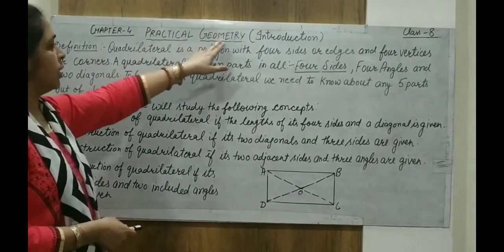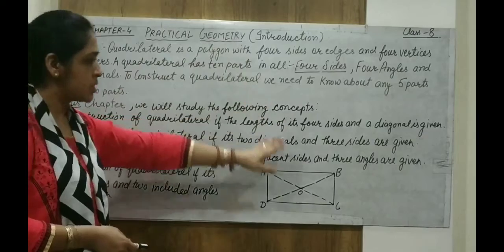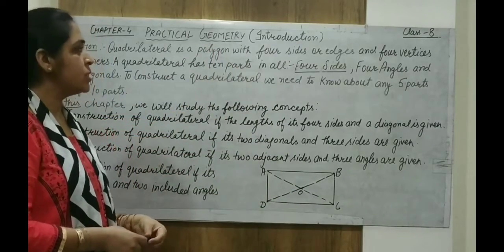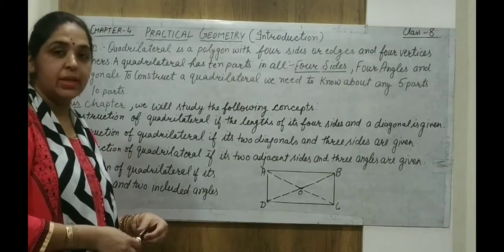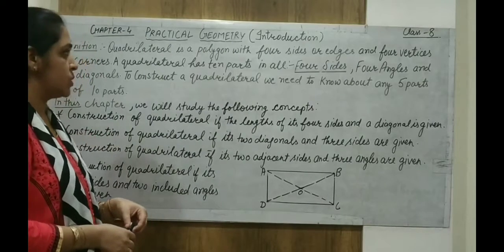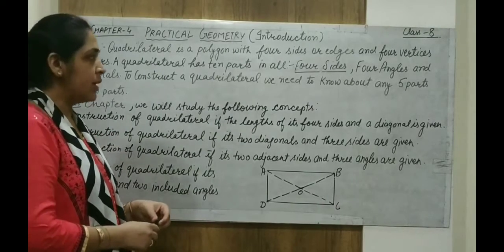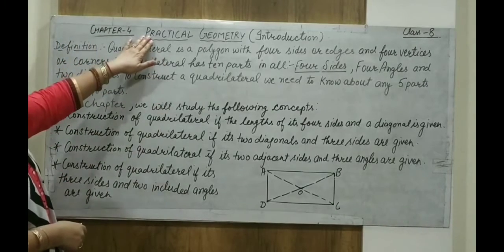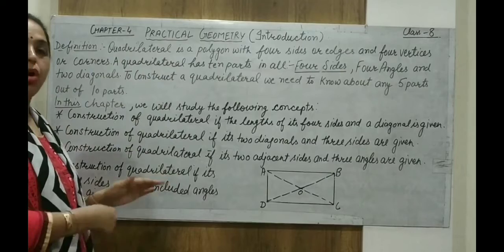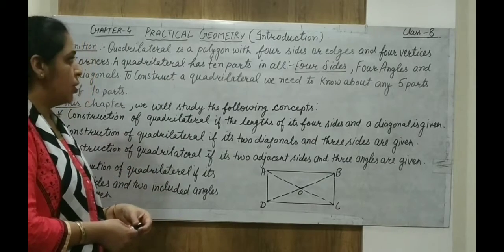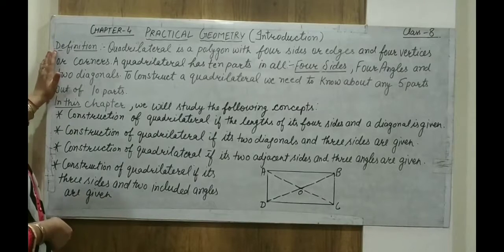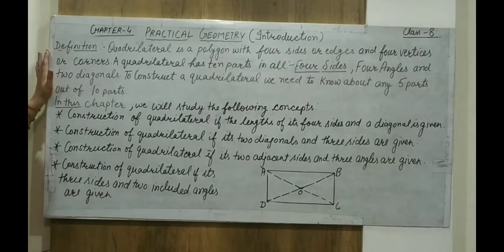In this chapter, we will look at what we have to construct and what kind of shapes we have to construct. As we have already done chapter 3, that is Understanding Quadrilaterals, in which we already studied about quadrilaterals. In practical geometry, we construct all such kinds of quadrilaterals. Let us start with the definition of which kind of figures or diagrams we have to construct in this chapter.